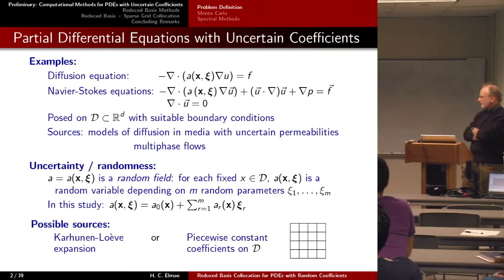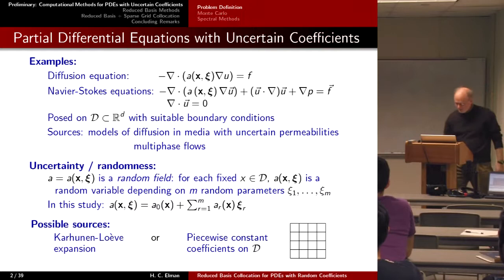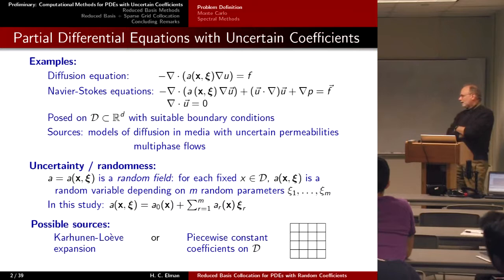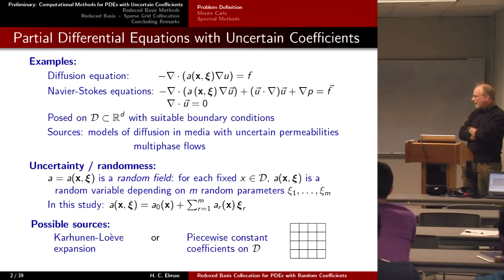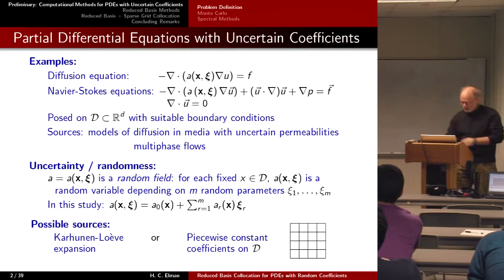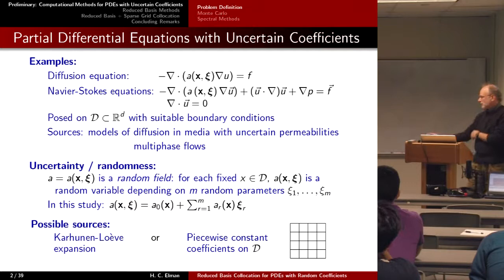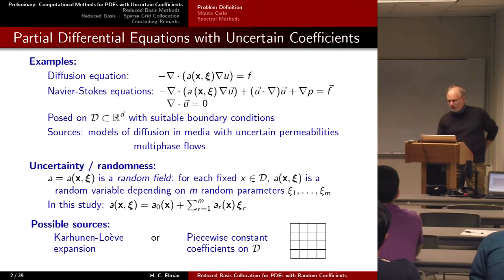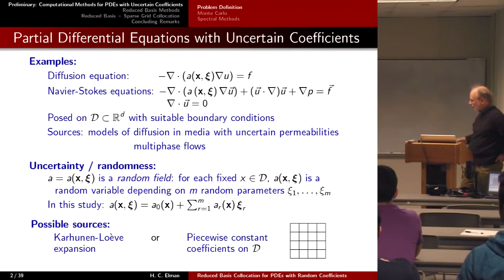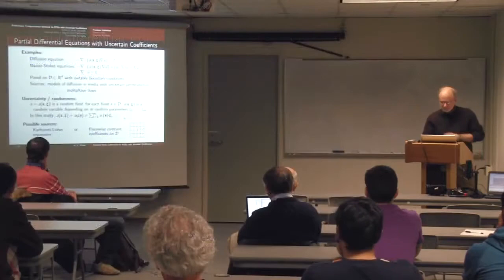In the case of a fluid model, we might have multi-phase flows, but we don't really understand the properties of the different phases. I'm going to assume that the structure of the random field is given by an expression of this type. I'll look at two examples: one in which we know something about the covariance of the random field and generate a Karhunen-Loève expansion associated with it, and alternatively, we can take the random field to be piecewise constant on some subdomains.